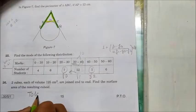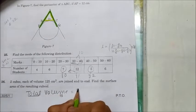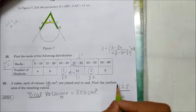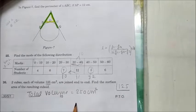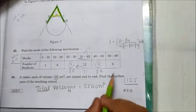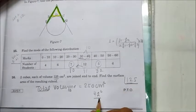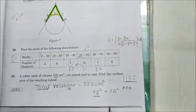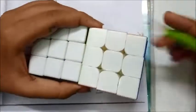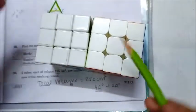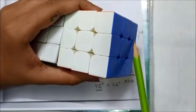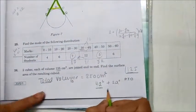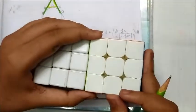The total volume becomes 250 cm³. Finding the side: cube root of 125 gives the side length a. For the surface area, each cube contributes 4a² as its lateral surface area, and the two exposed end faces add 2a² each. Since the joined faces are internal, the total surface area is 4a² + 4a² + 2a² + 2a² — effectively 2 × (4a² + a²) = 10a², giving us the total surface area of the resulting cuboid.